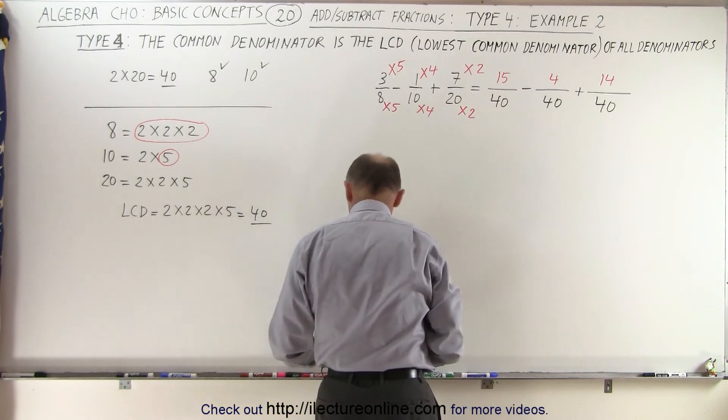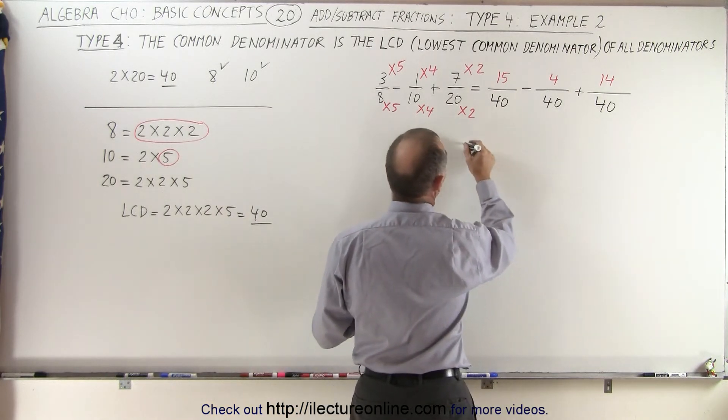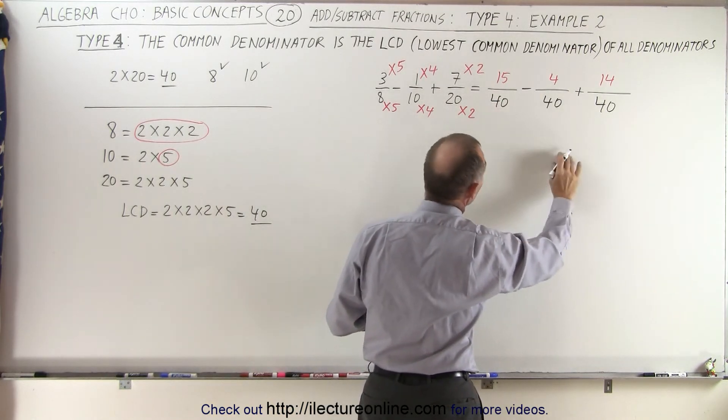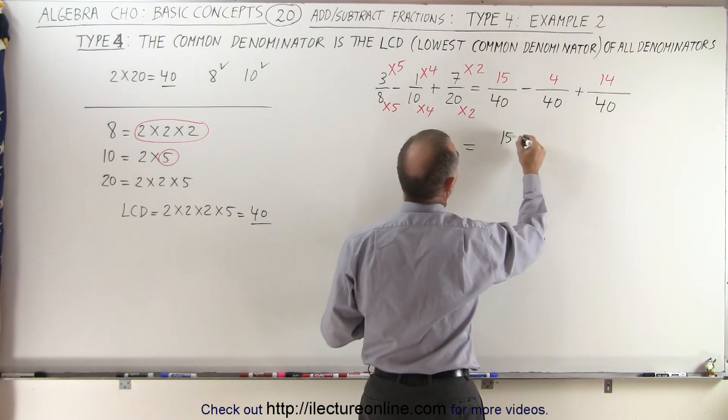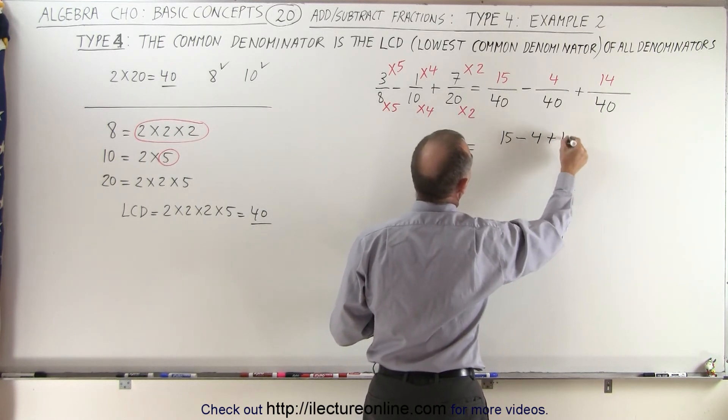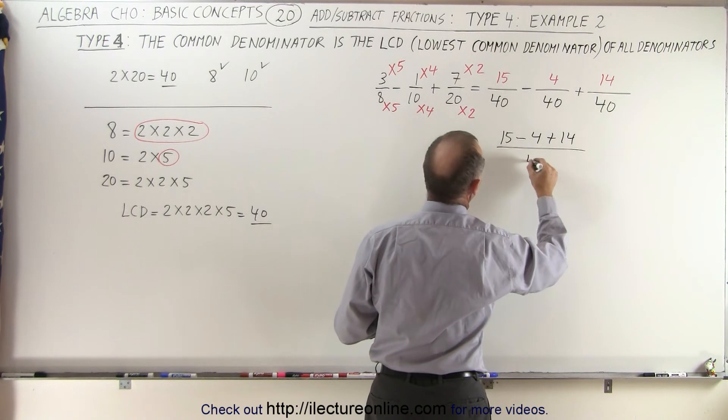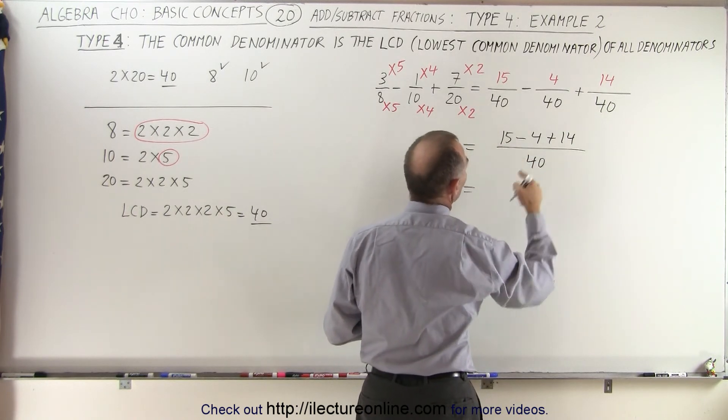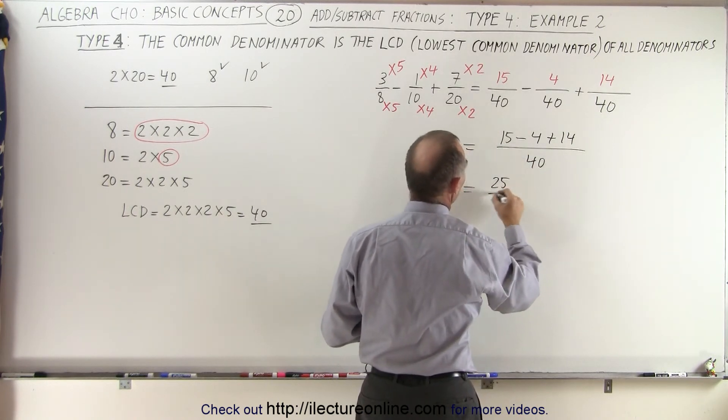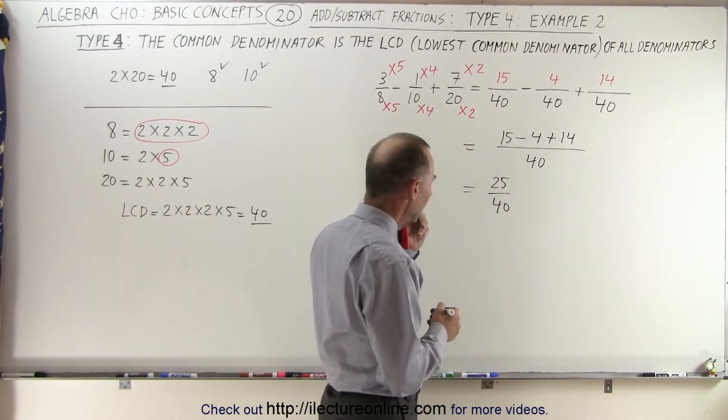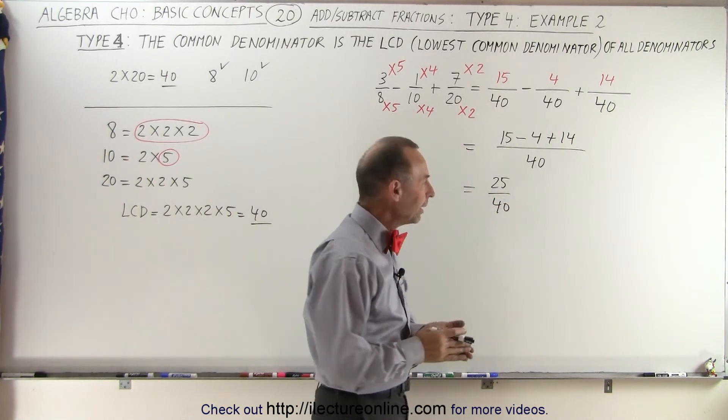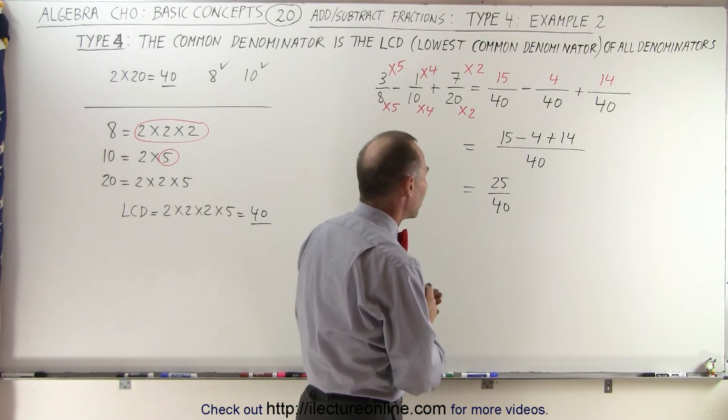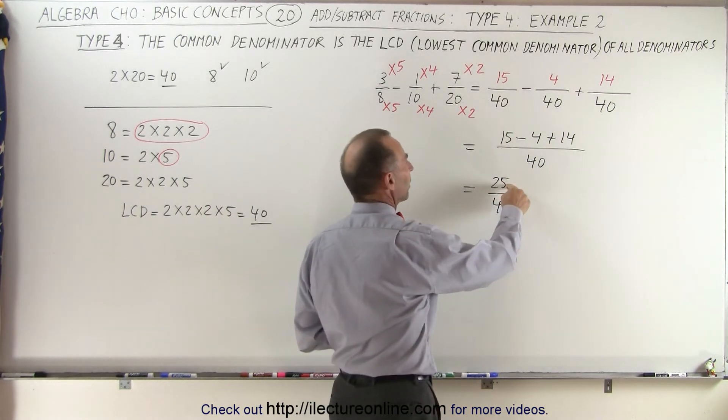So now we can write all of these numerators over one common denominator, so we end up at 15 minus 4 plus 14, all divided by the common denominator of 40, which is equal to 11 plus 14, which is 25 over 40.